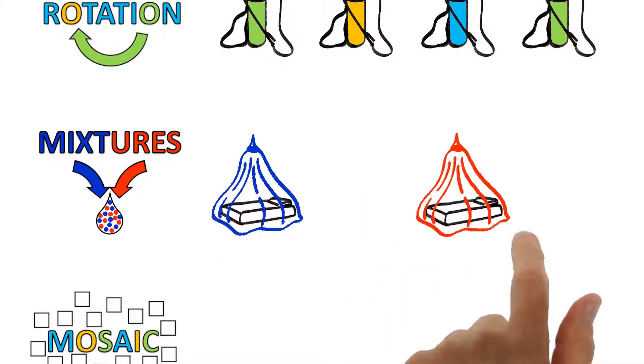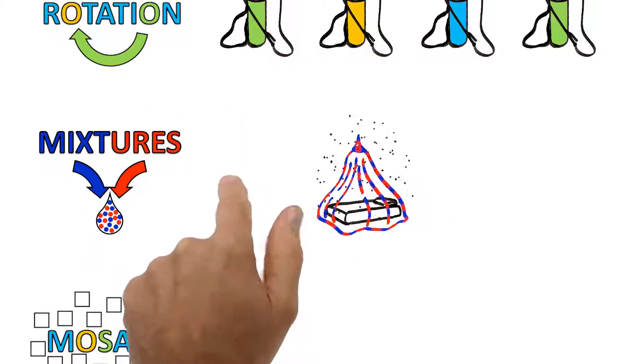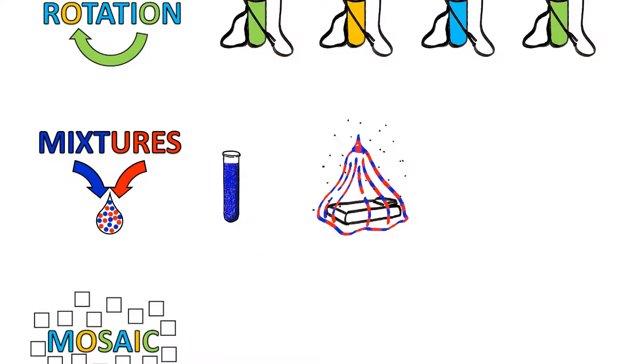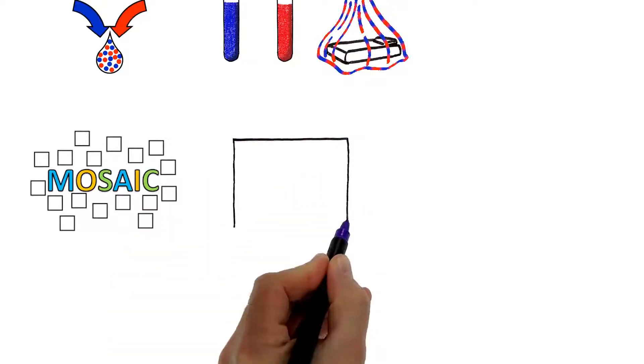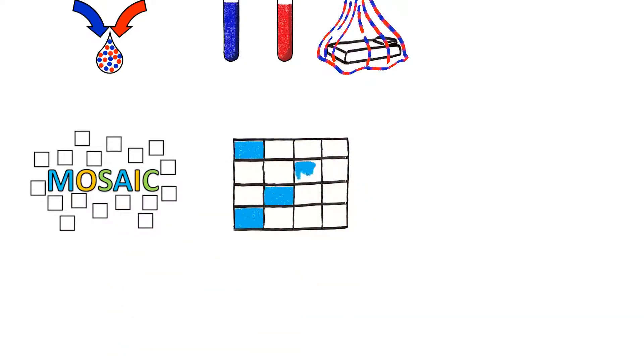Mixing insecticides into a single product, whilst ensuring that the dose gives complete kill, will also reduce the chance of resistance developing as mosquitoes not killed by the first active ingredient will be killed by the second one. Using different chemical combinations across geographic regions in a mosaic style will avoid the build-up of mosquito population resistance.